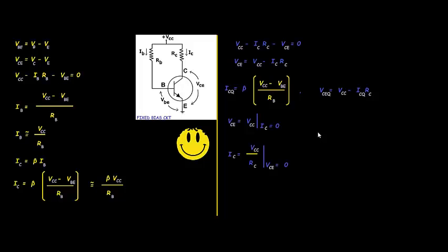Now we go to the main working of the fixed bias circuit. Consider the circuit here — it's the fixed bias circuit, also known as the simplest circuit. I took out the capacitors, so this circuit is the DC equivalent of the fixed bias circuit.